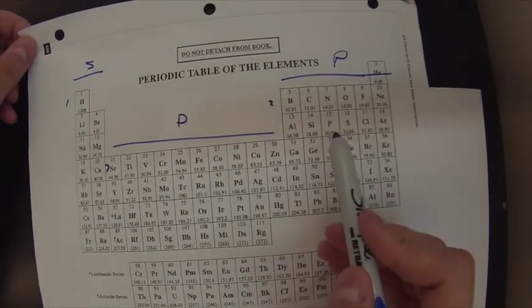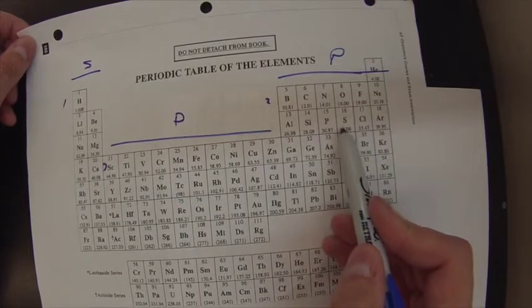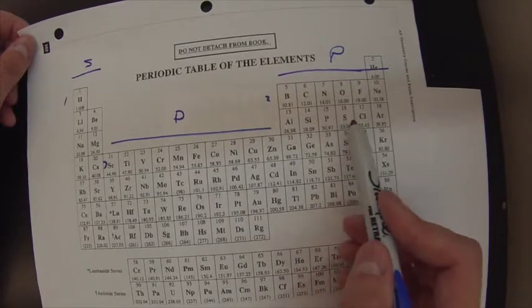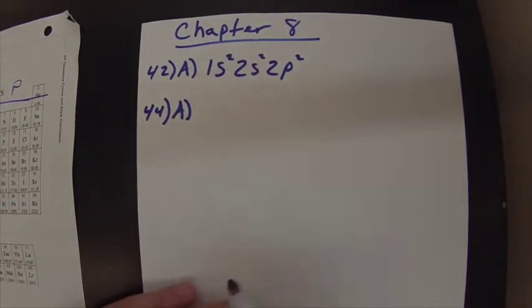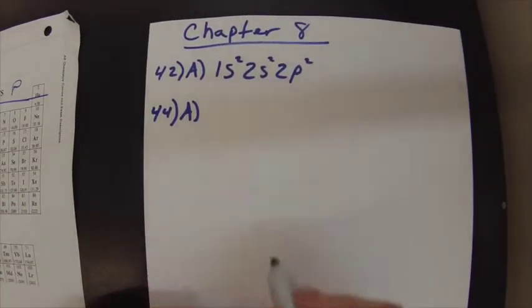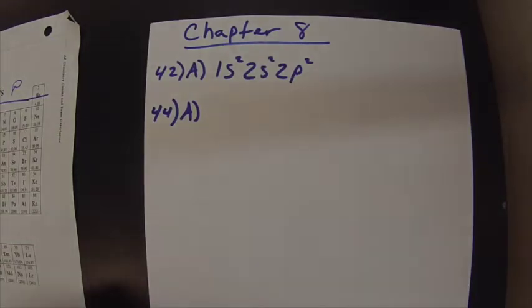So again, sulfur now is right here. Number 16, and it is in 3P. So we're going to have to go through the 3P orbital. So I do lines. Some people do boxes. You can do boxes if you want. Lines just depict the same thing, but just easier.